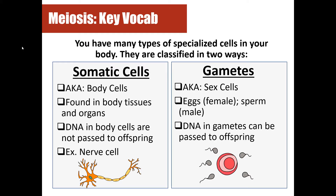In somatic cells or body cells, the DNA inside of those cells is not passed to offspring. However, DNA in gametes or sex cells can be passed to offspring. That's a key difference between the two that you need to make sure you know: somatic cells are body cells, gametes are sex cells.